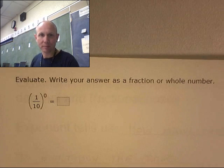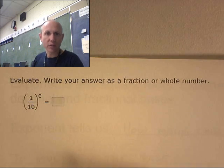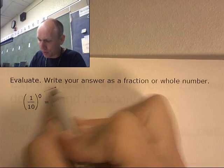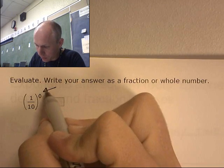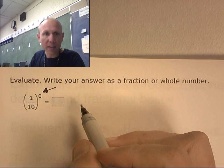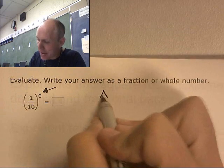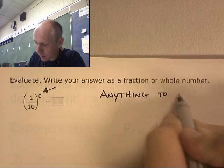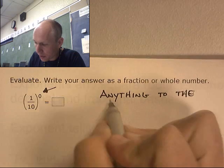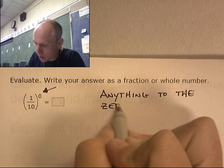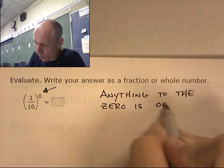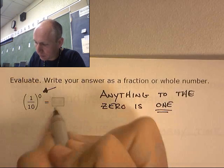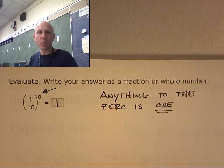Here's our next one. Oh yes, this is a good one. Ready? Evaluate. Write your answer as a fractional whole number. Remember that? What's that guy right there? See that? Remember the rule about that guy? Anything to the zero is one. Anything to the zero is one.